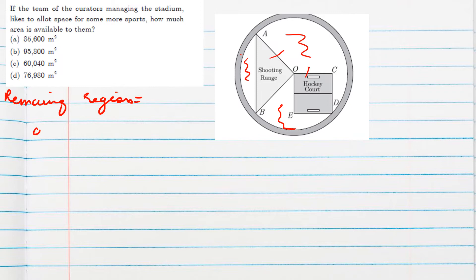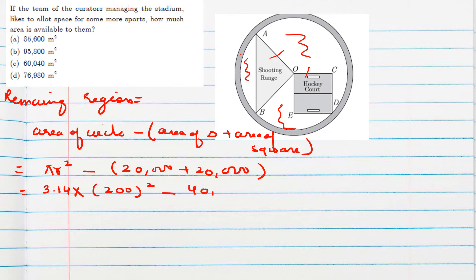So remaining region is area of circle minus area of triangle, that is shooting area, plus area of square. Which we have found already in previous two questions. Area of circle can be found by using the formula pi r square. And these both are having the same area, that is 20,000. So pi if we take 3.14, r square means 200 square, and this will be 40,000. So 3.14, 200 square will be 40,000. We can take 40,000 common, 3.14 minus 1.